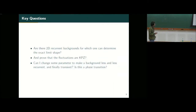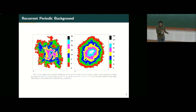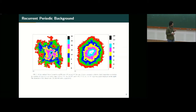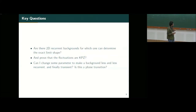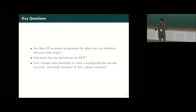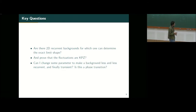The questions I want to answer are: Are there 2D recurrent backgrounds for which one can determine the exact limit shape? Are there such backgrounds where I can prove the fluctuations are in the KPZ class — that fluctuations scale as 2/3? And what is the relation between recurrent and transient backgrounds: is there some tuning parameter I can vary so that the background becomes less and less recurrent until the walker goes directly to infinity? Is this a phase transition, and what tools from the machinery of phase transitions can I use?